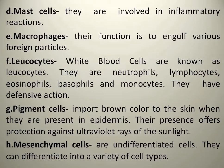Leukocytes — these are the army cells of our body and are part of the immune system. Among WBCs we have neutrophils, lymphocytes, eosinophils, basophils, and monocytes, and they are all involved in the defensive action of the body.